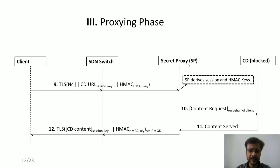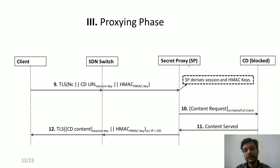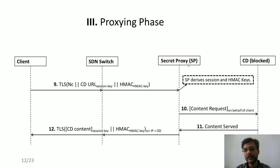In the proxying phase, the client uses the derived session key to send encrypted content to the secret proxy. The secret proxy also derives the session key, extracts the covert destination URL, fetches content from the CD, and returns it to the client while pretending to be the OD. This completes all three phases of Siege Breaker.